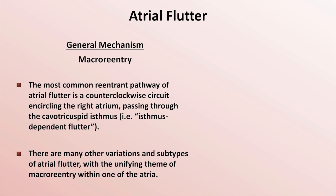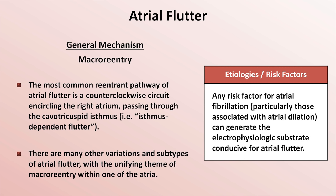When it comes to etiologies and risk factors for atrial flutter, any risk factor for AFib — particularly those associated with atrial dilation — can generate the electrophysiologic substrate conducive for flutter. Unlike SVT, patients with flutter develop heterogeneity of atrial conductive properties over time, almost always as a result of cardiac disease. Because the risk factors for AFib and flutter are essentially the same, patients commonly flip back and forth between the two rhythms. Cardiac surgery and percutaneous AFib ablations are also significant risk factors for unusual forms of flutter.